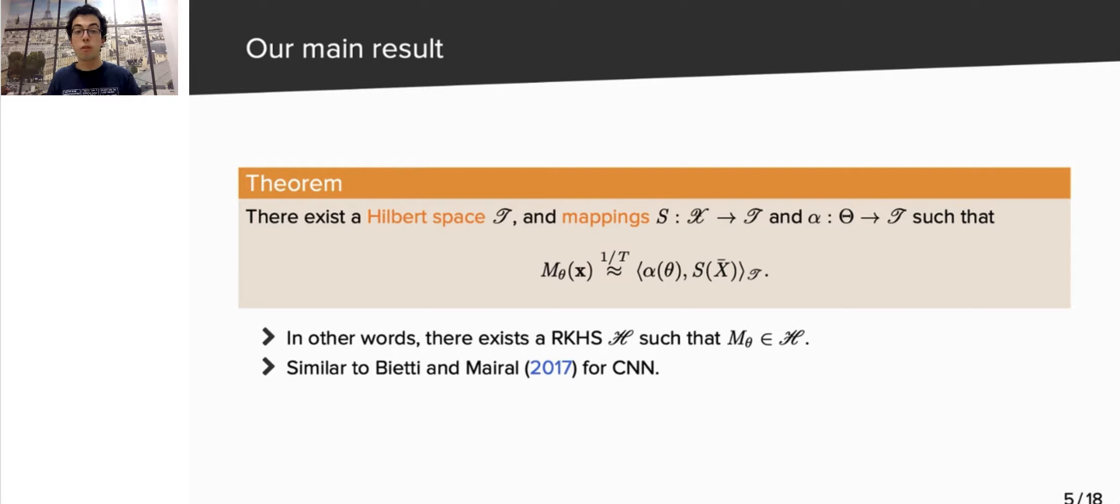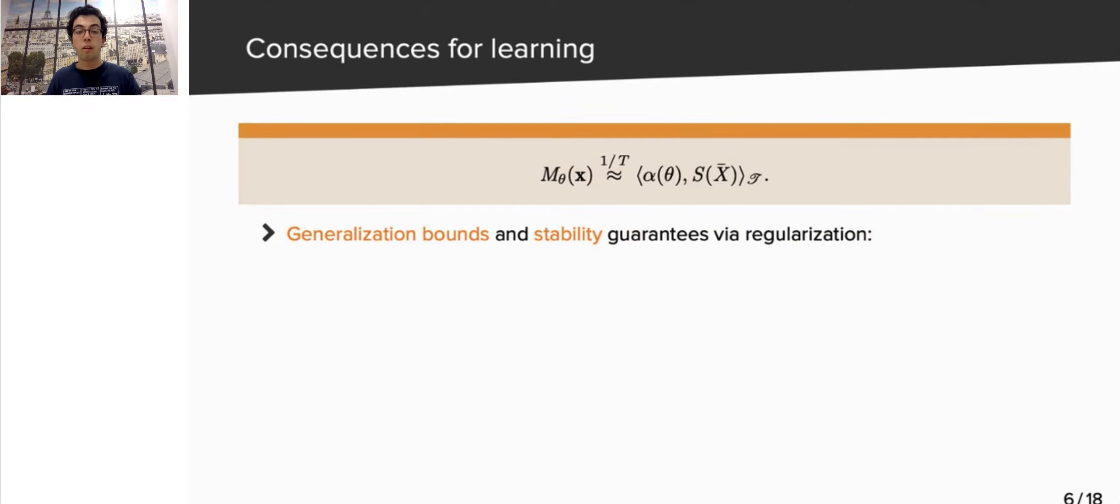Hence, we can reformulate the result as the existence of a reproducing kernel Hilbert space, which contains the RNN, up to the 1 over T error term. Here, I'd like to refer you to a work by Gietti and Merhal, with a similar idea, but for convolutional neural networks.